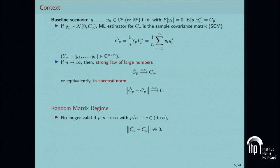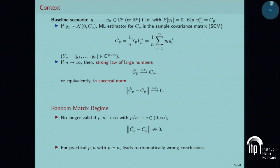Ĉ_p does not converge in spectral norm to C_p. And if you ask where it goes — the bad news is it doesn't go anywhere. Two copies of Ĉ_p will look very different in spectral norm. In fact, even for n larger than 100 times p, this convergence is not true.